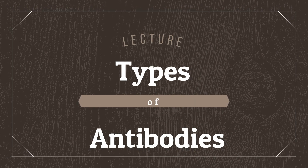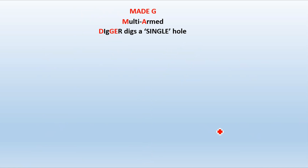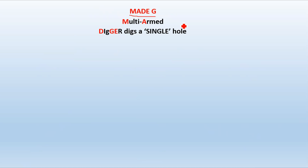Now we can move towards this last thing. We know that there are many different types of antibodies. To memorize the classes or types of antibodies we have many mnemonics, like the mnemonic 'game'. I created this particular mnemonic because it has a unique pattern, and you will understand once you complete this whole lecture. Now if we talk about 'mergi', we know that there are five different types of antibodies.